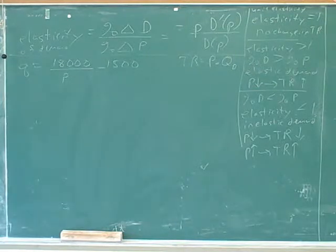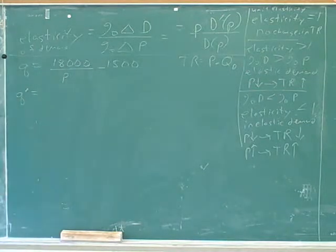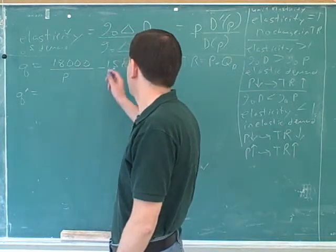Alright, now I think we're ready for number 21. Any ideas about how we might start on this? Take the derivative of Q. Yes. So let's do that. What is the derivative of Q? Do the power rule. No, no, it's a quotient. Oh, it's a quotient. Okay, good.